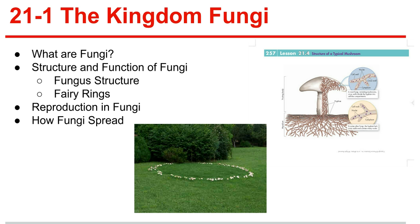So what are fungi? They aren't plants nor animals. Fungi are eukaryotic heterotrophs that have cell walls, and their cell walls are made up of chitin. They digest food outside of their bodies and then absorb it, and they usually feed on decaying matter.